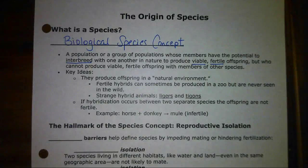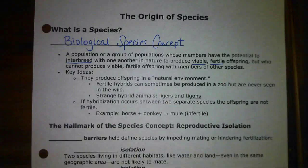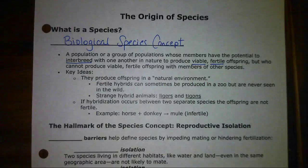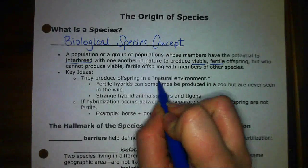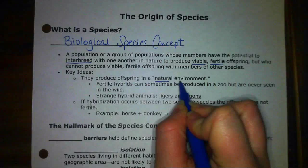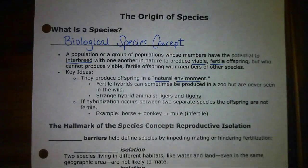There are actually variations on that definition. The biological species concept states that a species is a population that can interbreed and produce viable, fertile offspring. Also, another key idea is that they would be a species in the natural environment, meaning that they can interbreed in the natural environment.